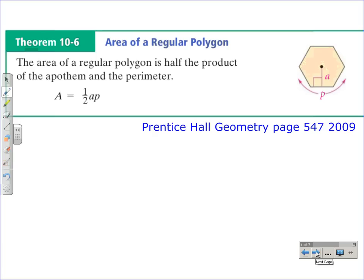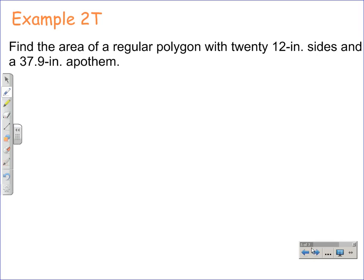Find the area of a regular polygon with 20 twelve-inch sides and a 37.9-inch apothem. So first, we're going to put down the formula for the area of a regular polygon: one-half times a times p, where a is the apothem and p is the perimeter of the polygon.